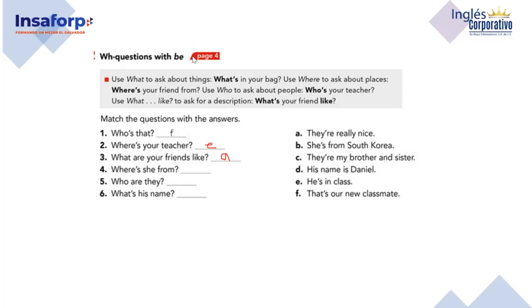Dalila — number four, please. 'Where is she from?' Letter B — read the sentence. 'She's from South Korea.' South Korea — very good. Edgar — number five. 'Who are they?' 'They're my brother and sister.' Letter C — easy peasy. Andrea — number six. 'What's his name?' 'His name is Daniel.' Letter D — that is correct. Very good, everybody, great job.